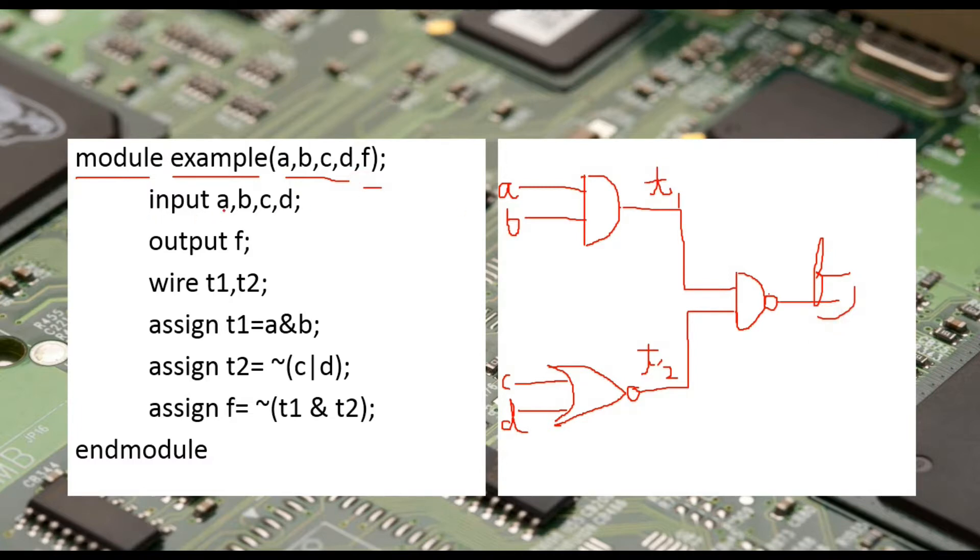Now the inputs are a, b, c, d and output is f, whereas we also need to define this t1 and t2. These are some internal signals, so we will define it as wire t1, t2. We will soon get to know what do we mean by a wire, whereas at present you can memorize it in a way that whenever we are interested in making some sort of signals which are present internal to the circuit, then we use this concept of wire.